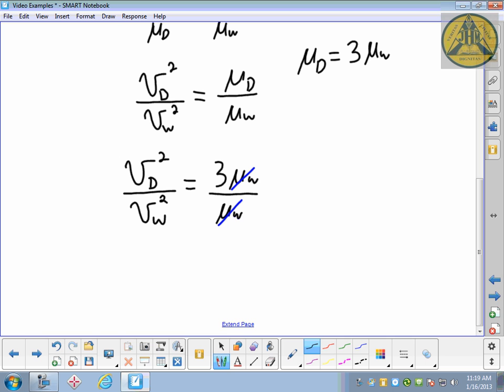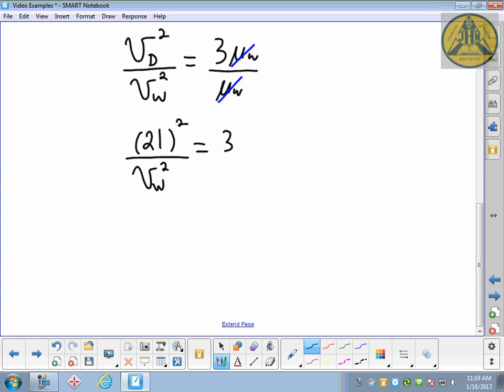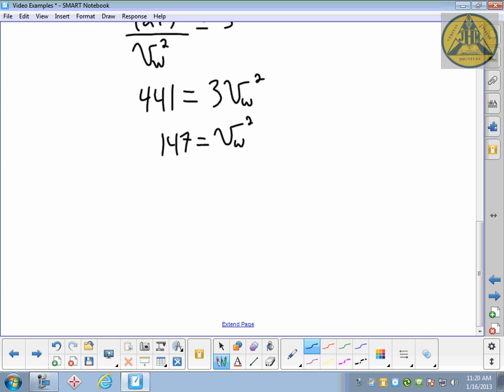So when it's dry, 21 meters per second squared over VW squared equals 3. Cross-multiply: 21 squared is 441 equals 3 VW squared. Divide both sides by 3, so 147 equals VW squared. Square root both sides, and we get 12.1, or 12 rounding off to 2 significant figures, for how fast you can go when it's wet without losing control.